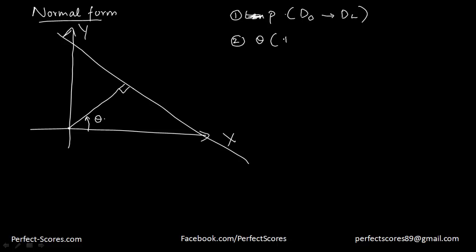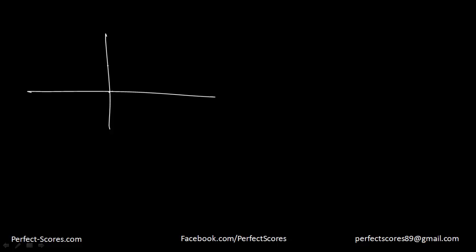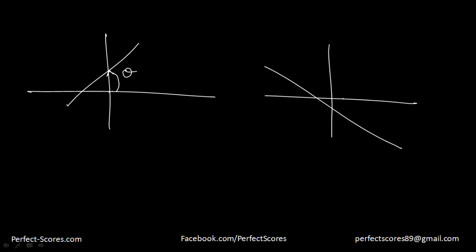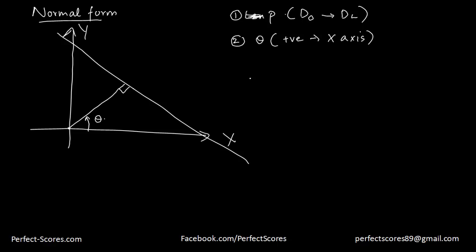Theta is the positive angle that the perpendicular makes with the x-axis. What do we mean by a positive angle? That means even if the line is oriented in different ways, the value of theta is always going to be a positive angle, which means it always rotates anti-clockwise. If you want to know more about angles, you should watch the angles video in the playlist. So theta is something we need to know, and the value of P is something we need to know.